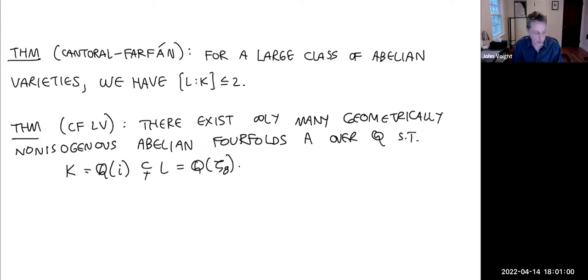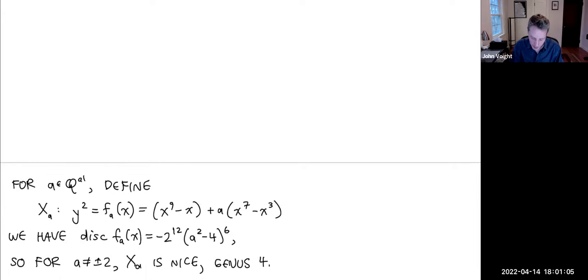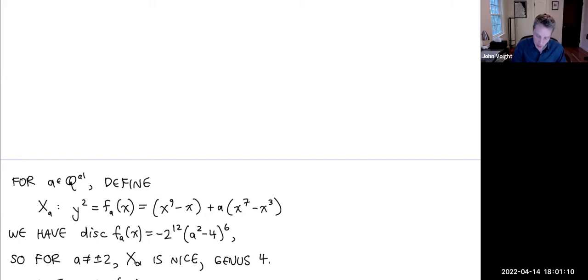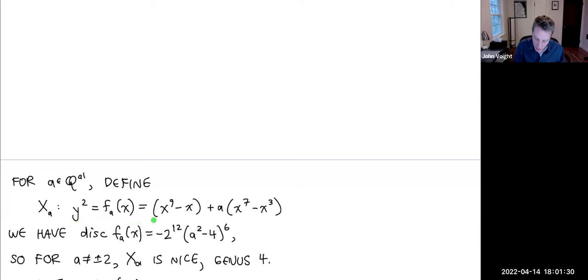The family we work with is: y² = f_a(x), where f_a(x) = x(x⁴ − 1)(x⁴ + ax² + 1). This is a hyperelliptic curve, as nice as can be, and the expression is visibly very symmetric. Factored, you can see why immediately.